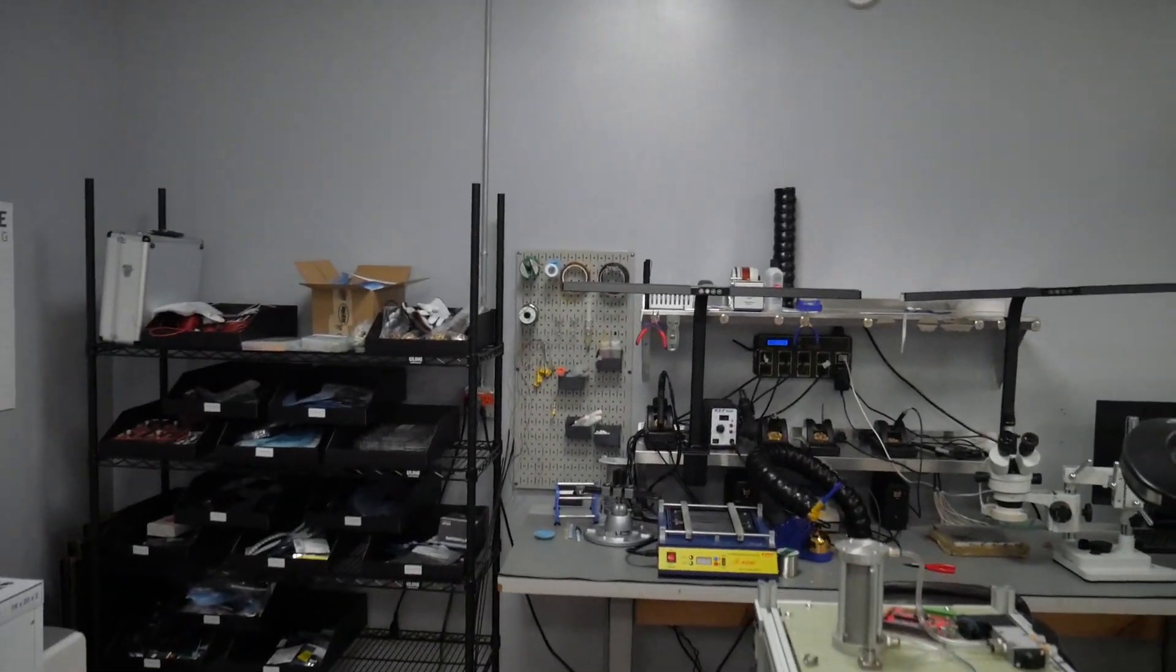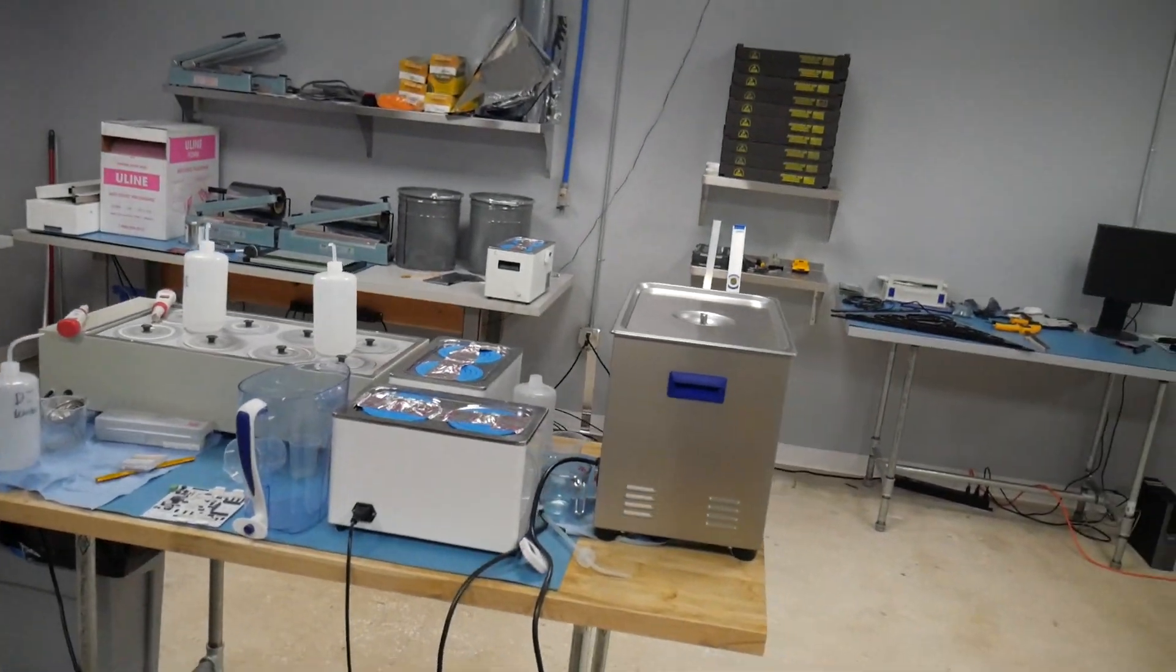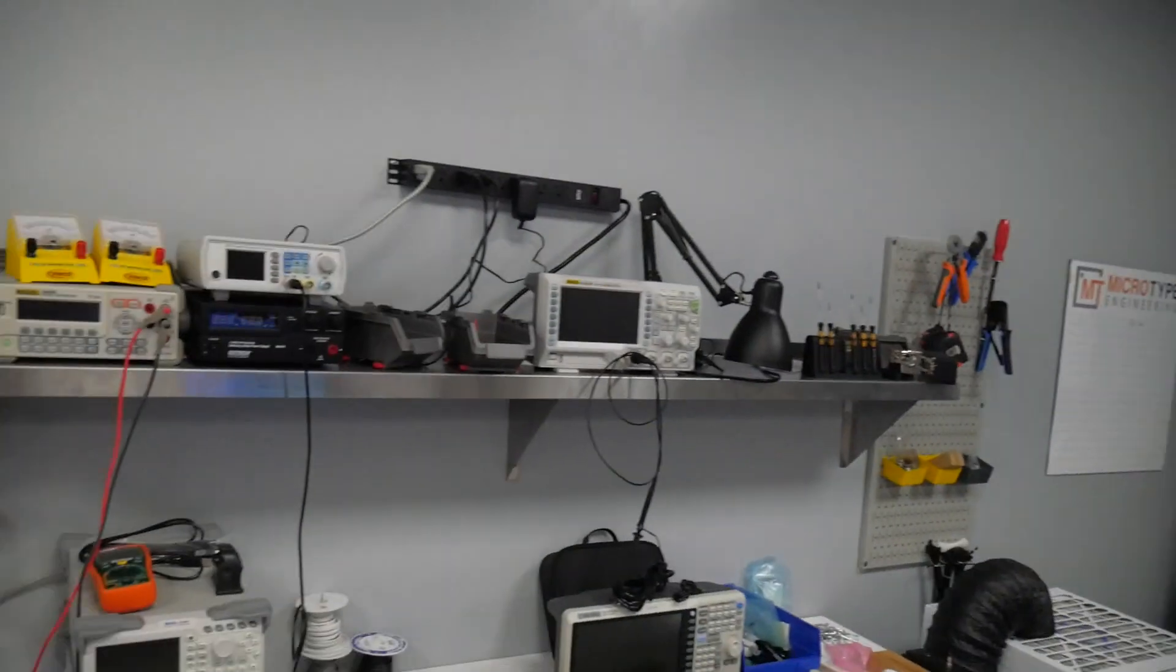So that's the bulk of the equipment that we have for production assembly specifically. We also have obviously full rework, inspection, cleaning equipment, packaging, and then some other test equipment over here.